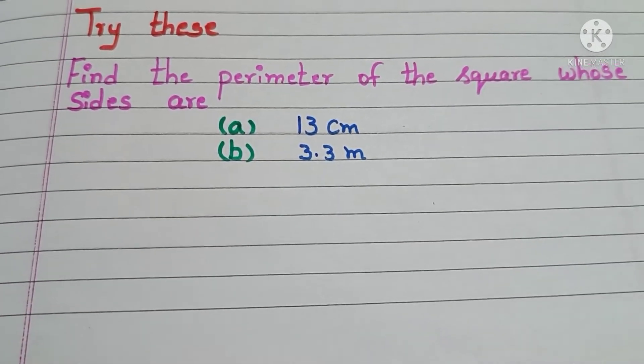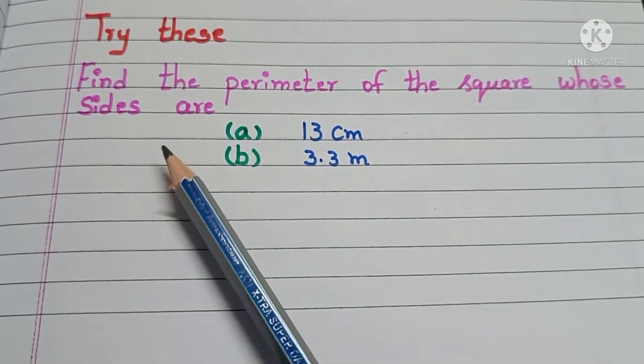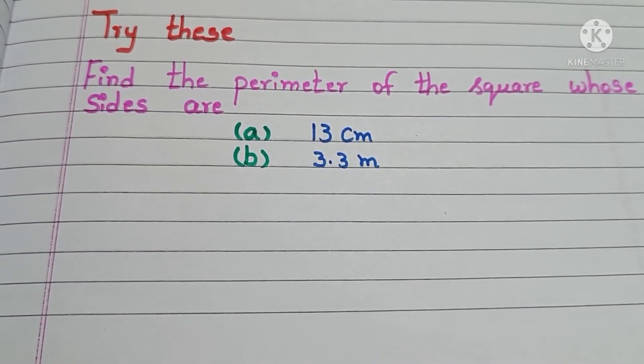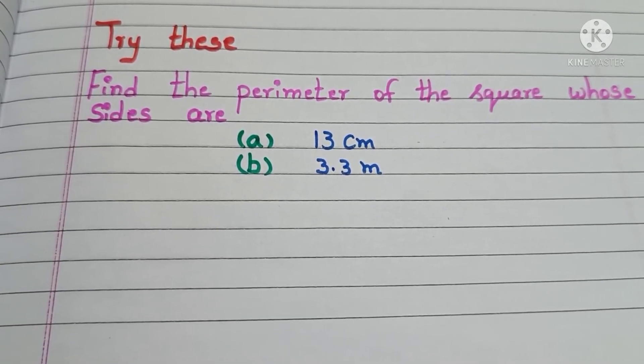Now, try this. Find the perimeter of a square whose sides are 13 cm and 3.3 meters. Give me the answers in the comment box.